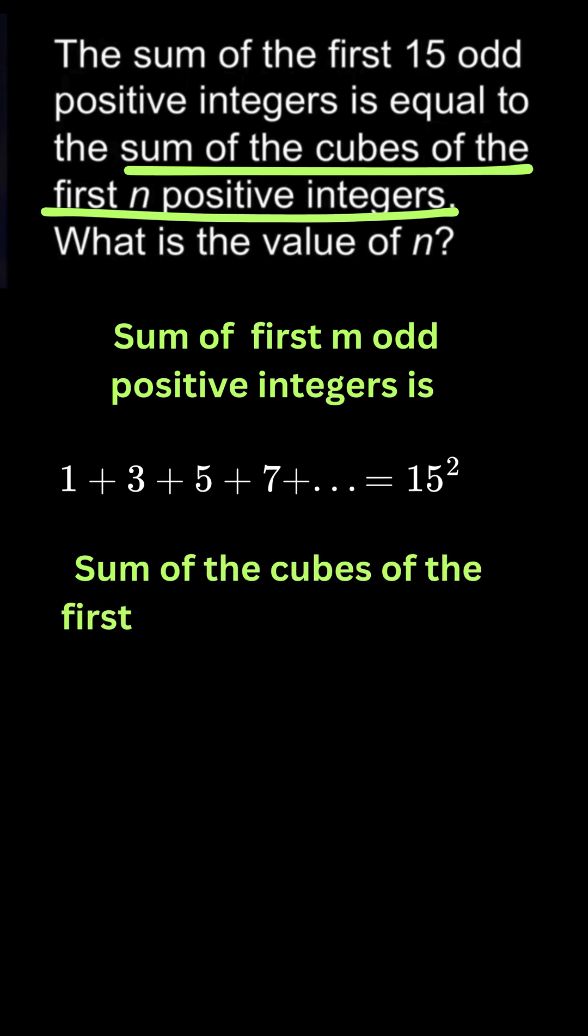Now, the sum of the cubes of the first n positive integers is given by n times n plus 1 by 2, whole square.